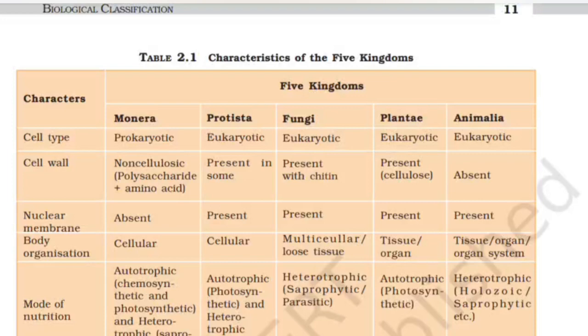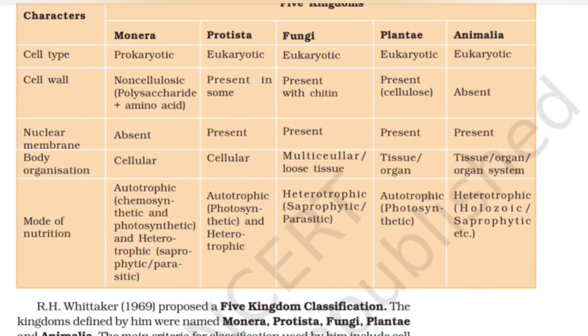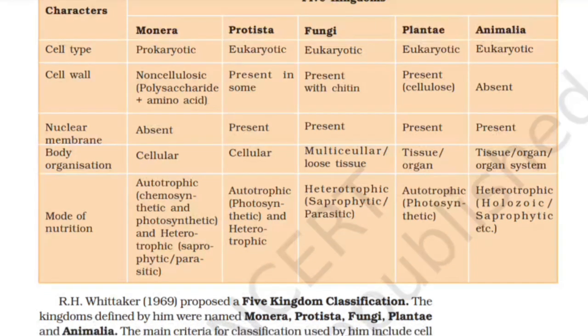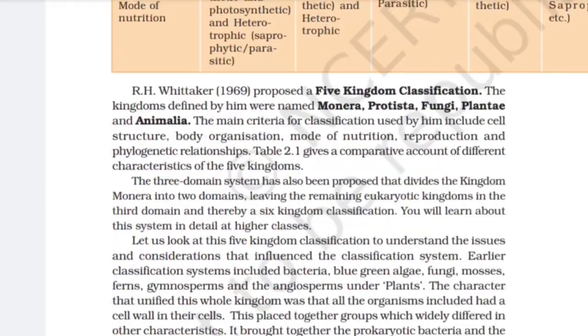Continuing Table 2.1: Nuclear membrane — Fungi, Plantae, and Animalia all present. Body organization: Monera — cellular; Protista — cellular; Fungi — multicellular loose tissue; Plantae — tissue/organ system. Mode of nutrition: Monera — autotrophic (chemosynthetic and photosynthetic) or heterotrophic (saprophytic, parasitic); Protista — autotrophic photosynthetic; Fungi — heterotrophic saprophytic or parasitic; Plantae — autotrophic photosynthetic; Animalia — heterotrophic holozoic, saprophytic, etc.